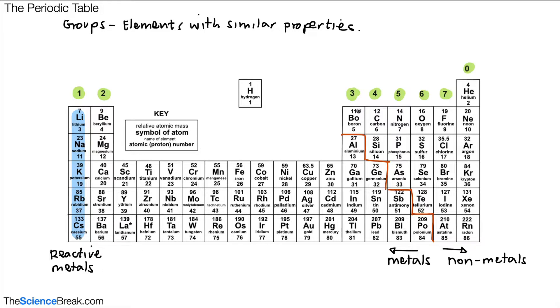On the other side of the periodic table, we have group 0. These are all very unreactive gases called the noble gases. They're in group 0 because they are very unreactive. That's the similar property they all have.